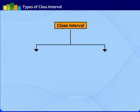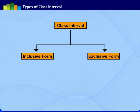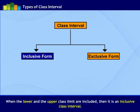There are two types of class intervals. They are inclusive form and exclusive form. Let us first understand about inclusive form. When the lower and the upper class limit are included in class interval while grouping, then it is called as inclusive class interval.